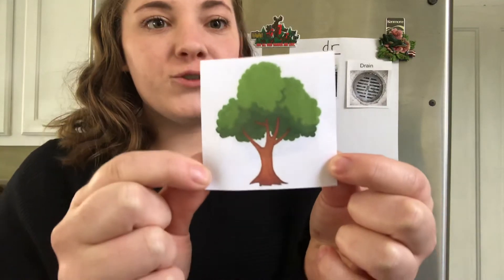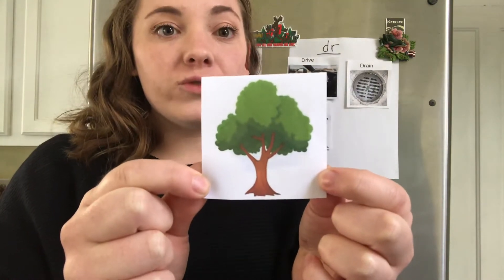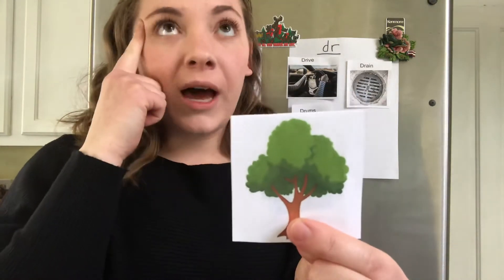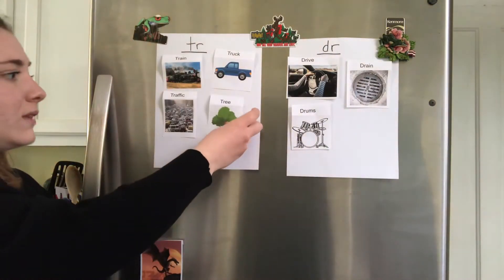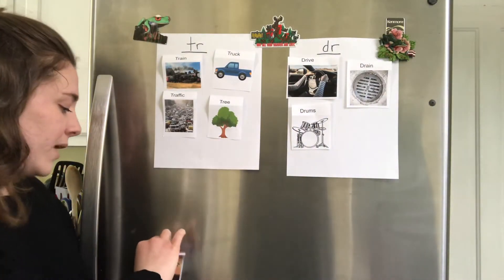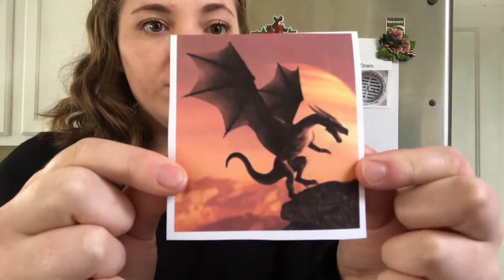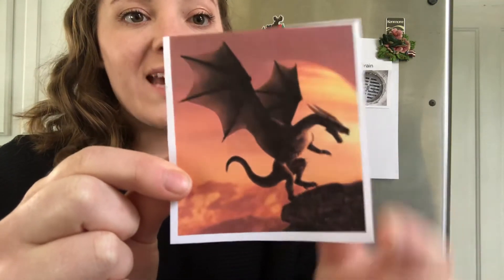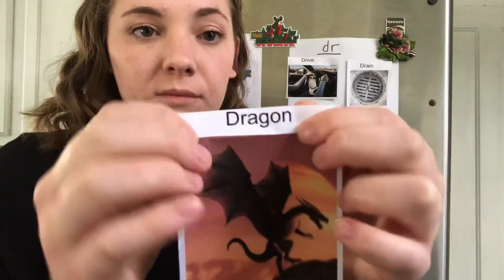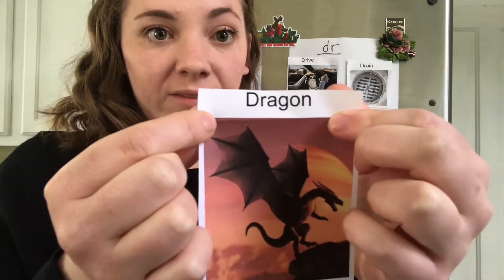This one's kind of obvious. This shows a picture of a tree. T-tree. Think about it — T-R. It's really hard to tell the difference, but if you take a minute and really sound it out in your head, it'll make sense. So this is a picture of a dragon. D-dra-gon. So we have a D-R at the beginning of that as well.